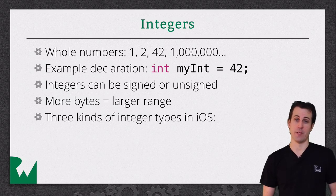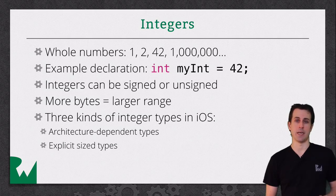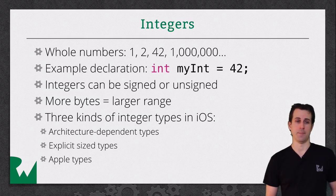There are three different types of integers in iOS. There's architecture-dependent types, explicit data types, and Apple types. Let's look at each of these one at a time.